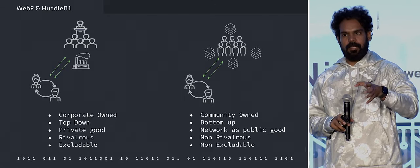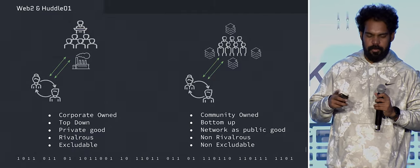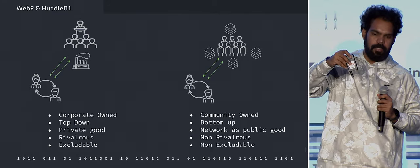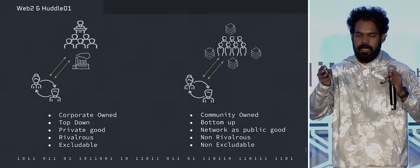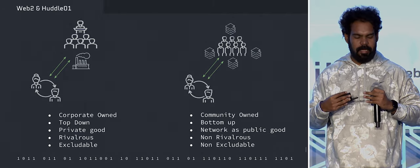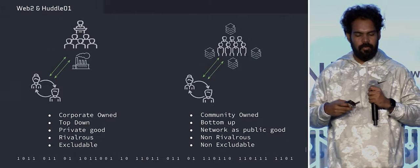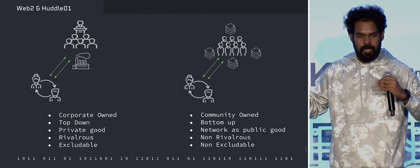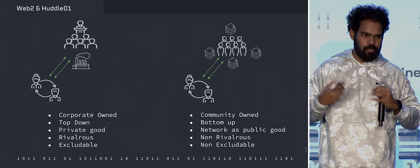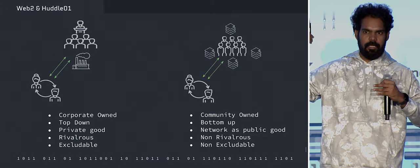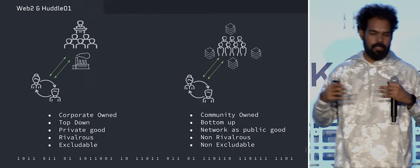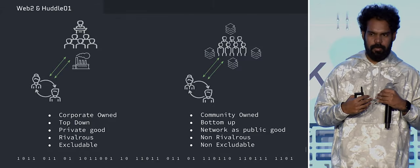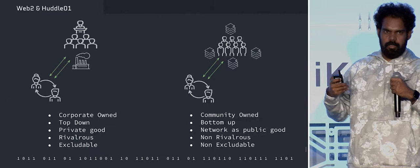Let me compare how Huddle is in the web2 world. Industries like Google, Zoom, and Meet are basically top-down, corporate-owned, and private goods — their counterparts compete with each other with rivalries. There exists a design space to enhance all of those things. We are making Huddle's RTC ecosystem community-owned, a bottom-up economy, and this network becomes a public good — non-rivalrous and non-excludable. Even Zoom can run nodes into this ecosystem or use this protocol to power their services, and normal individuals can become nodes too, making this network open, neutral, borderless, decentralized, and censorship-resistant.